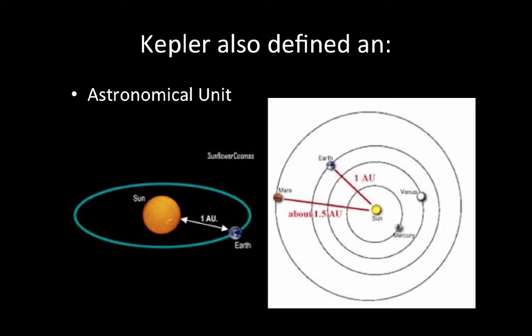Kepler also defined an astronomical unit, which is the average distance between the sun and the earth. As we learned before when talking about the seasons of the earth, we have a perihelion and an aphelion, or the distance here and here, and one is longer than the other, but we just average it out and call that one astronomical unit. So one astronomical unit is from the sun to earth. Mars is about 1.5 astronomical units away. So we measure space based on this, which is 150 million kilometers.